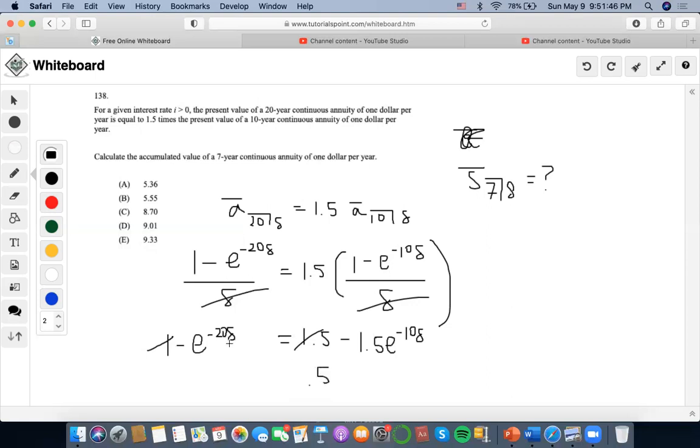We can also bring this to the other side. So I'll end up getting this. This looks as if it's a quadratic equation. Why? Because we could set x equals to e to the negative 10 force of interest because this would become x squared minus 1.5x plus 0.5.